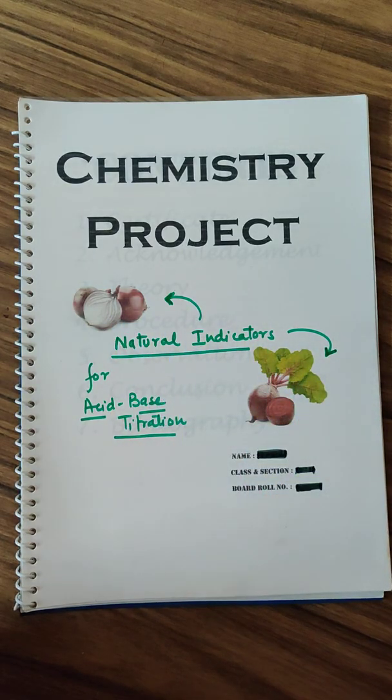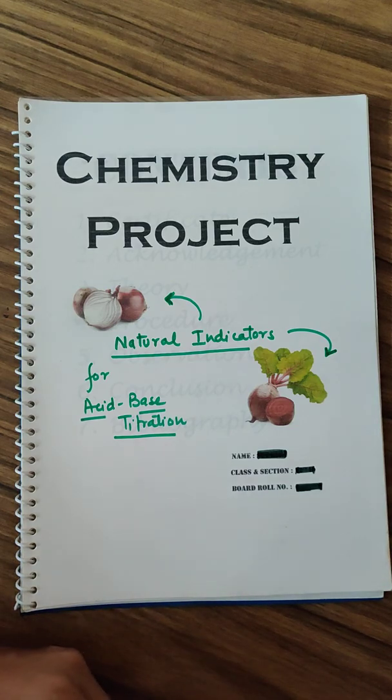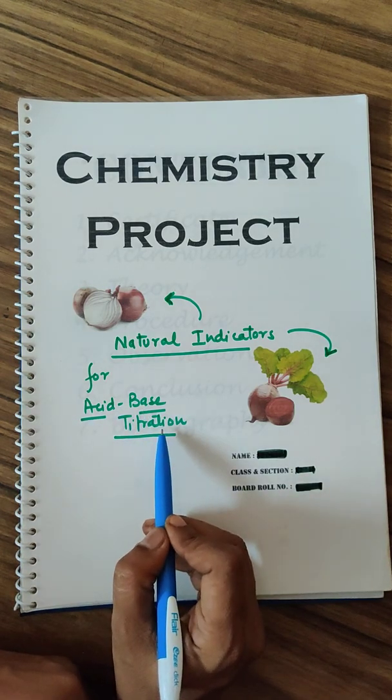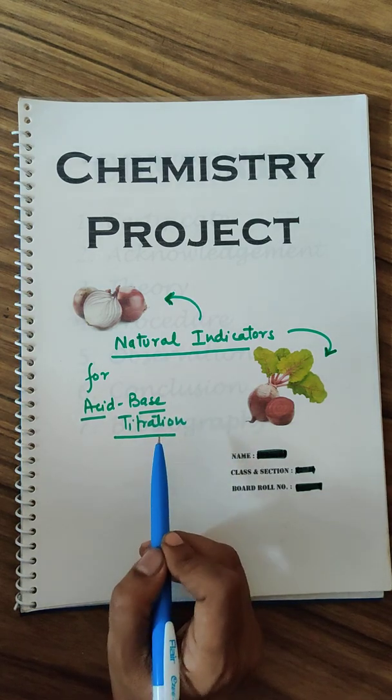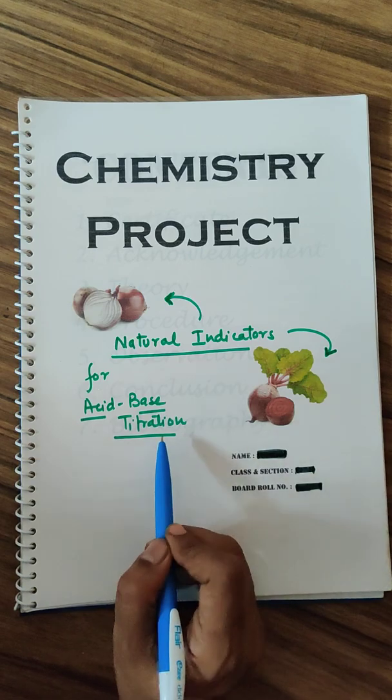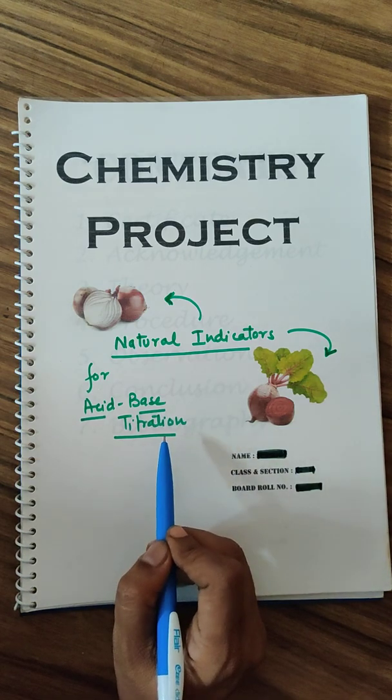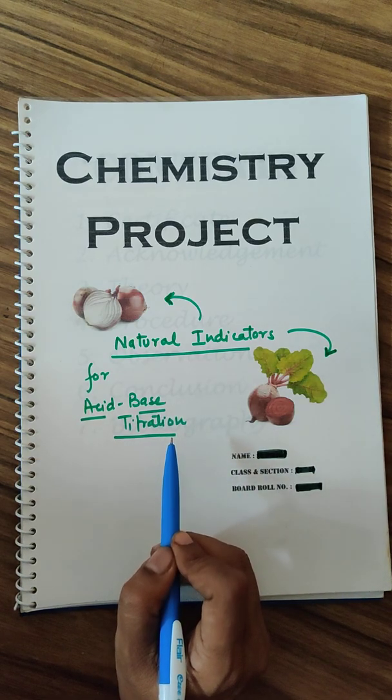This particular project has used onion peels and beetroot. These natural indicators are prepared and then compared with phenolphthalein by acid base titration. If you do not know the acid base titration, then please go through the video already posted on my channel for the NaOH versus HCl titration.